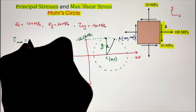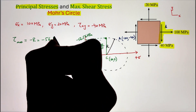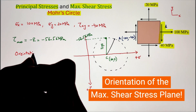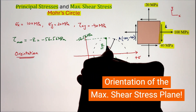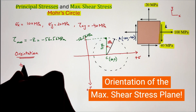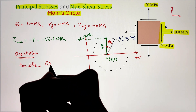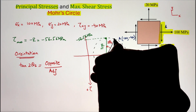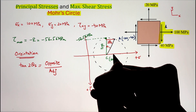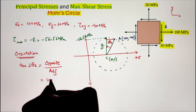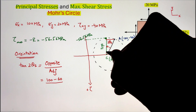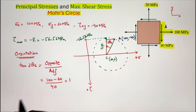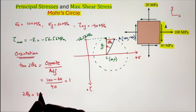For the orientation, we measure the angle from our reference plane C to A, but this time in the counter-clockwise direction going towards the radius where the maximum shear stress line is. This angle is represented as 2 theta S, where S is the shear stress subscript. Using the tangent function — opposite over adjacent — the opposite is 100 minus 60, giving 40, and the adjacent is also 40. So the angle is again 45 degrees. Dividing by 2 gives theta S, which we use to draw our stress element.